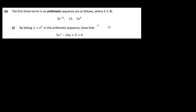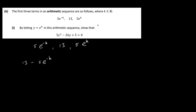Moving on to part b. The first three terms of an arithmetic sequence are given, where k is an element of ℝ: 5e^(−k), 13, and 5e^k. We let y = e^k as instructed. For an arithmetic sequence, the common difference must be equal, so: 13 − 5e^(−k) = 5e^k − 13. Note that e^(−k) = 1/e^k, so replacing e^k with y gives: 13 − 5/y = 5y − 13.